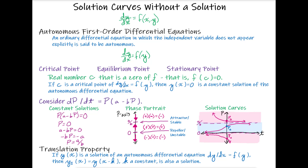We notice that it is the product of two terms, so we have a property that tells us that product equals zero when either or both of the terms is zero. Setting the first term p equal to zero gives us p equals zero as a constant solution. And if we set a minus bp equal to zero and solve for p, we'll find p equals a divided by b. This gives us our constant solutions — our equilibrium values or stationary values — for this autonomous first order differential equation.